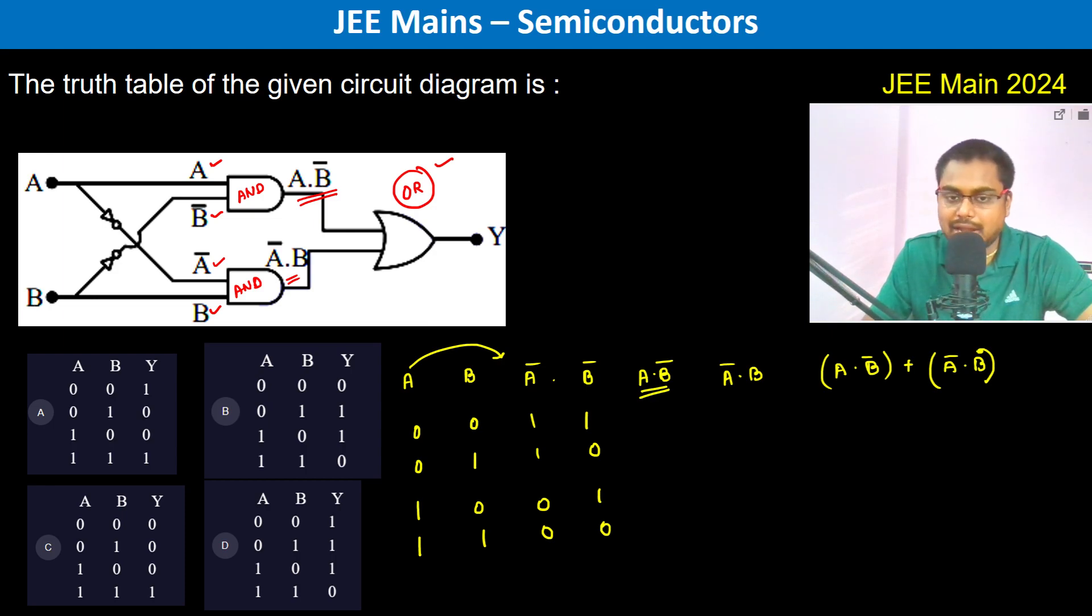Now A and B bar, A and B bar, so zero one, it's going to be zero zero zero, it's going to be zero one one, that has to be one, one zero both should be one, so zero.